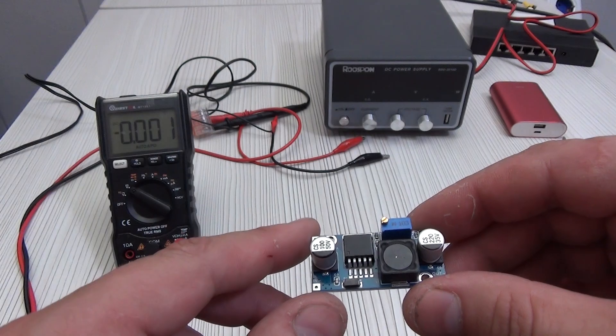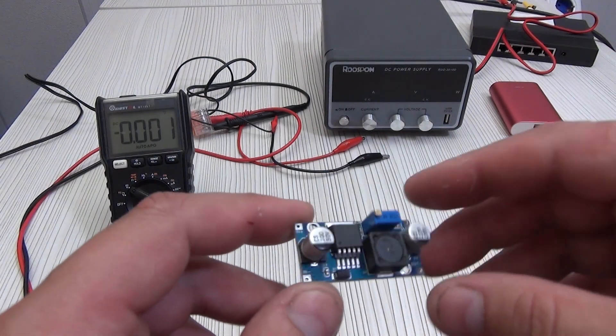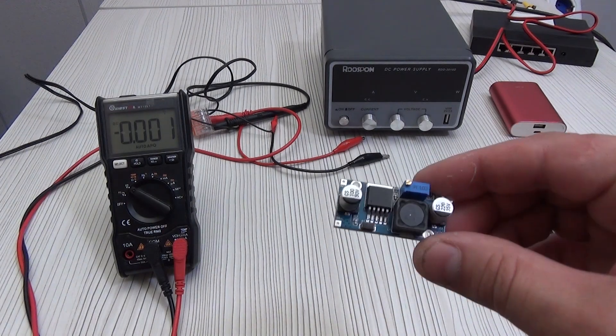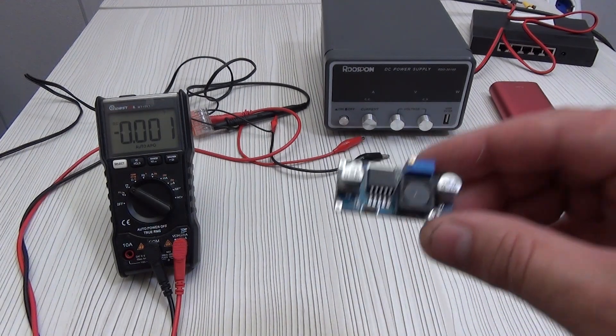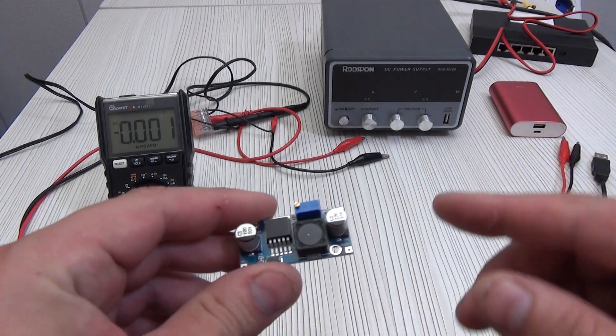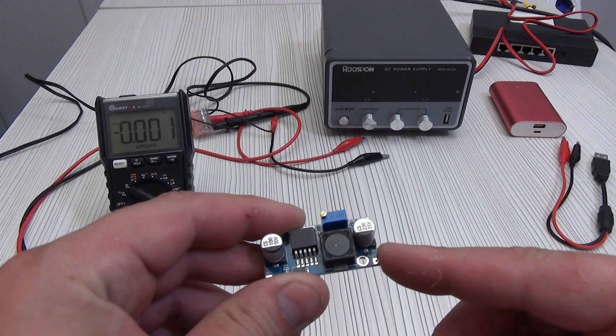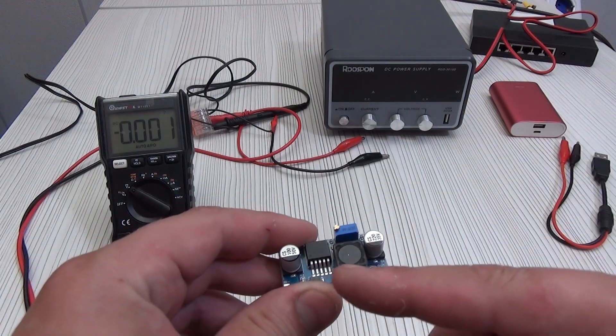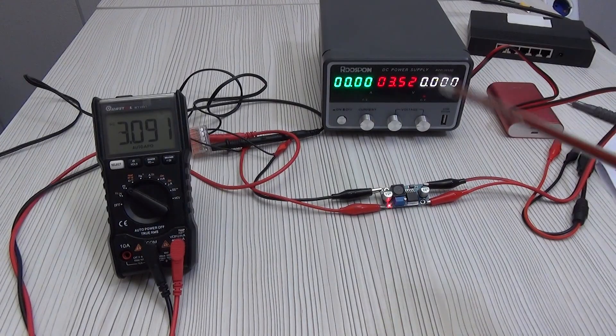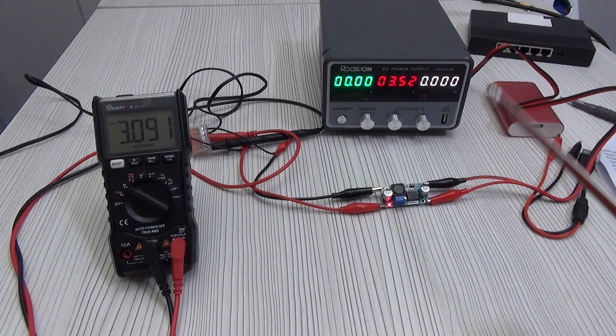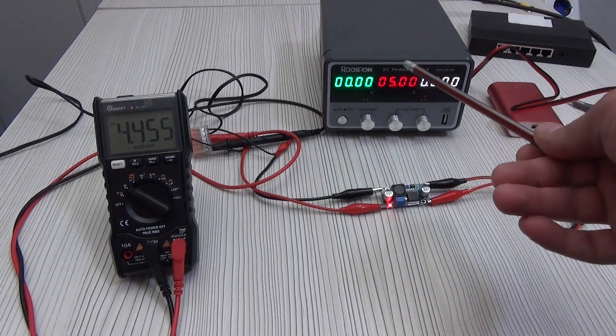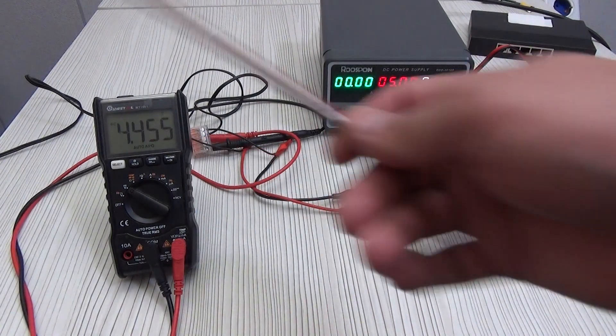This board is visually similar to the previous one, but now its task is to lower the voltage. We connect the incoming voltage to the IN contacts, and we get a reduced voltage on the OUT contacts. The minimum possible difference between the input and output voltage is 1.5 volts. The minimum is 3.5 volts at the input and 3 volts at the output. That is, when connecting 5 volts, the output will be a maximum of 4.5 volts.